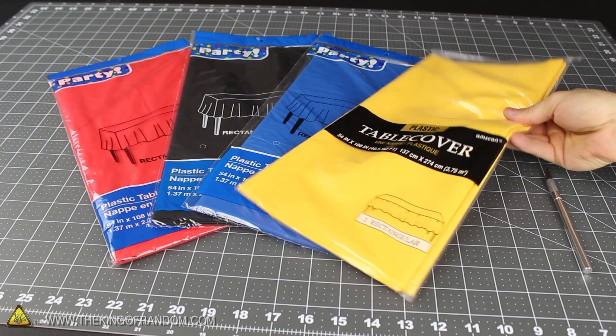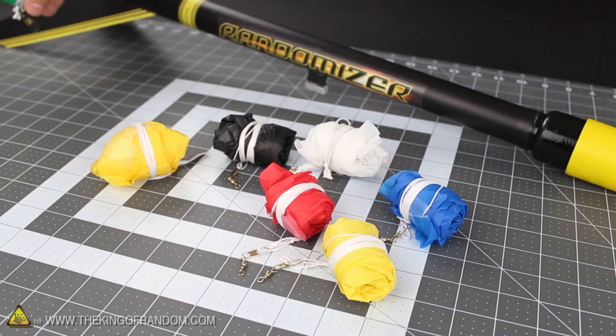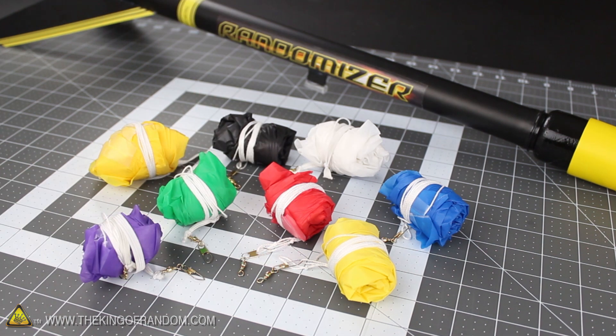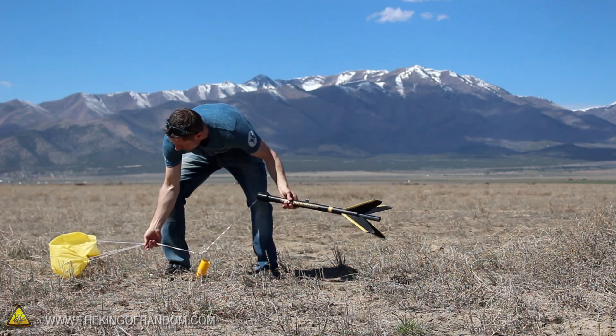Well, now you know how to convert the humble plastic tablecloth into a boatload of parachute recovery systems. So whether you plan on making skyballs or launching rockets, you'll have a much better chance of recovering them undamaged.